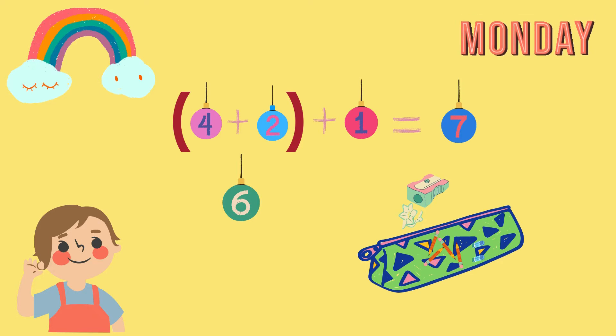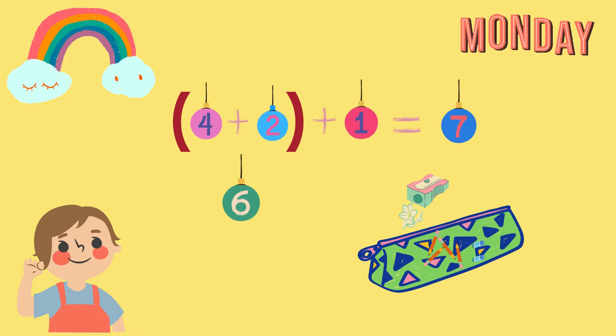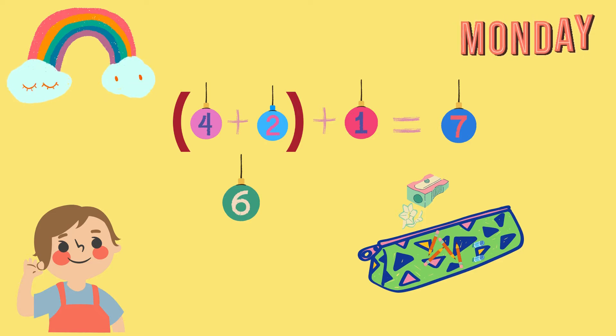Then he found his sharpener under the table and put it back into his pouch. So now he has totally seven items in it. Six plus one is equal to seven.